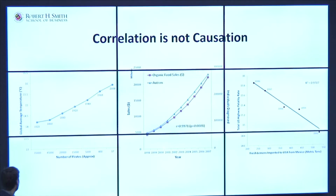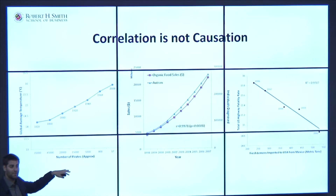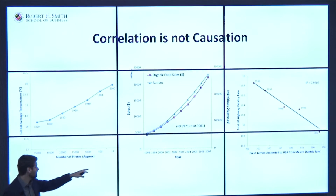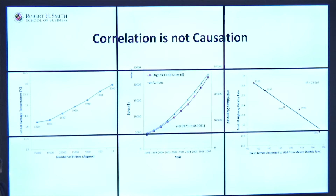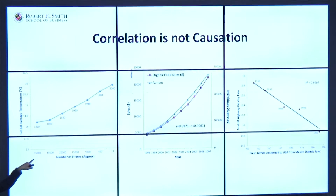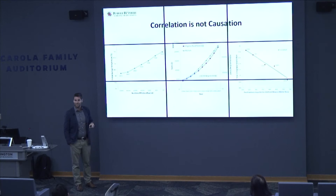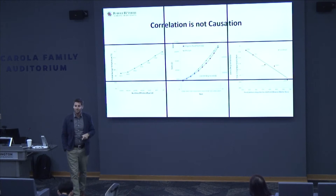Here are some of my favorite examples of correlation not being causation. On the left, you've got global average temperatures and the number of pirates in the world. Over time, the number of pirates has been increasing, and so has global average temperature. So the question is: do you think that if we dramatically increased the number of recruits to the pirate community, global temperatures would rise even further? We've solved climate change — let's just put all the pirates in prison or make them get office jobs.